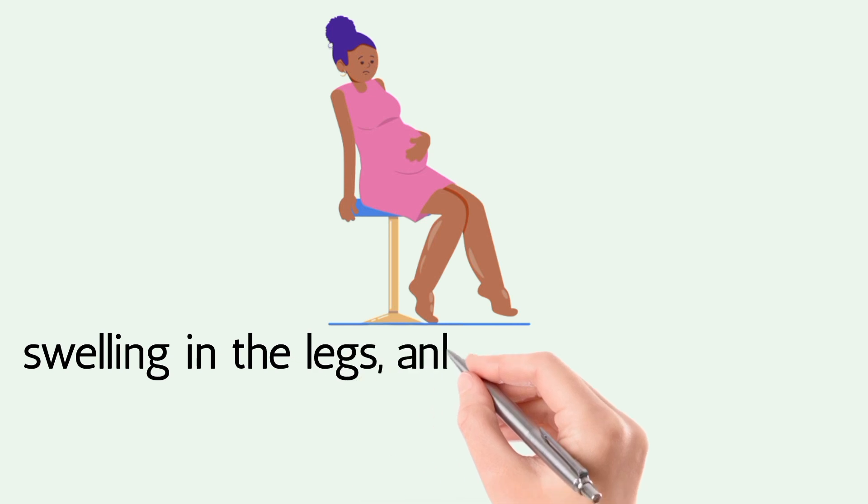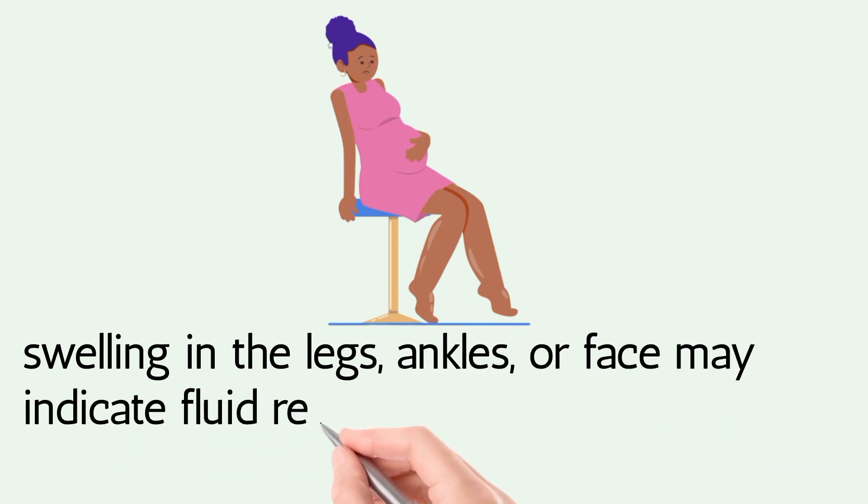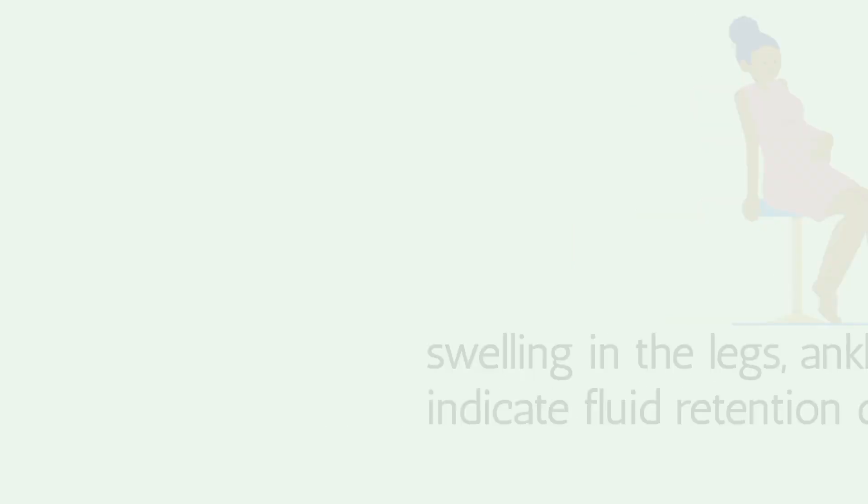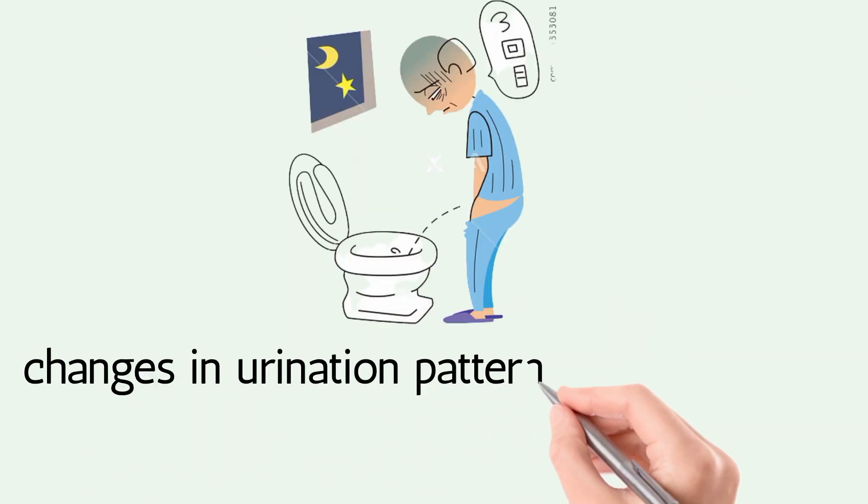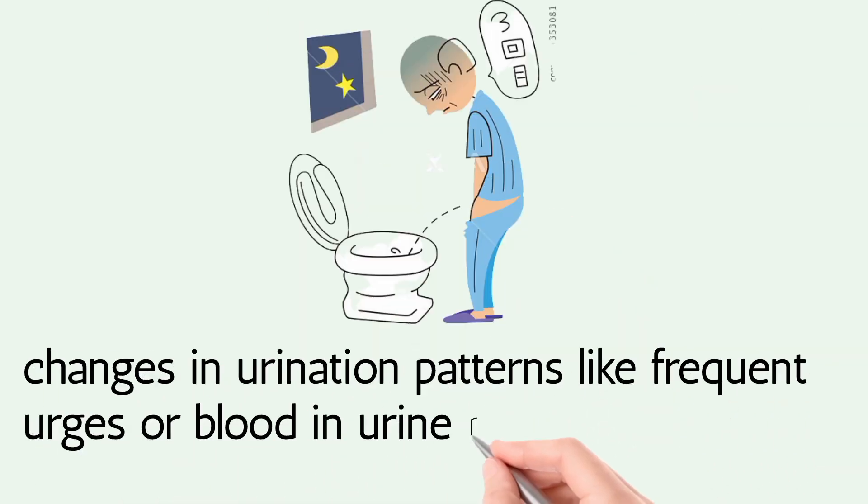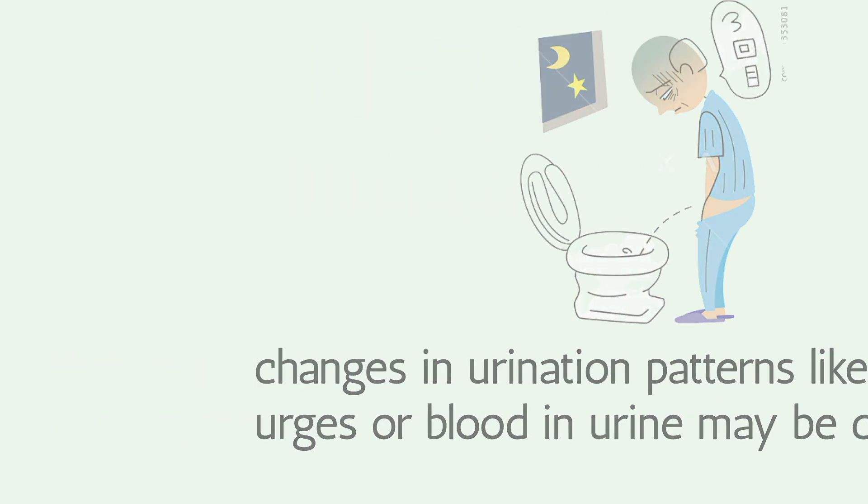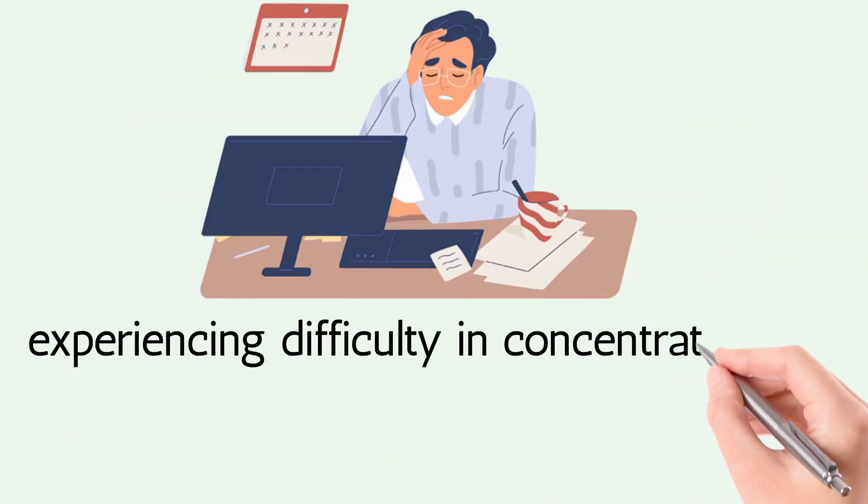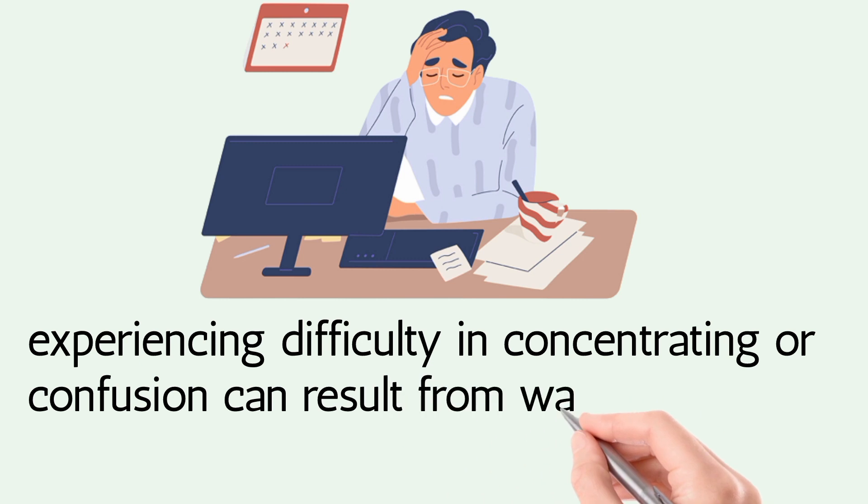Thirdly, changes in urination patterns like frequent urges or blood in urine may be concerning. Fourthly, experiencing difficulty concentrating or confusion can result from waste buildup in the body.